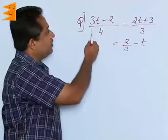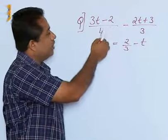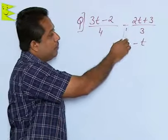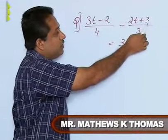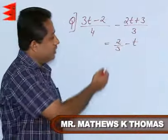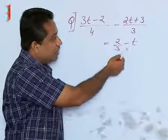Okay, let us look at this question: 3t minus 2 upon 4 minus 2t plus 3 upon 3 is equal to 2 by 3 minus t.